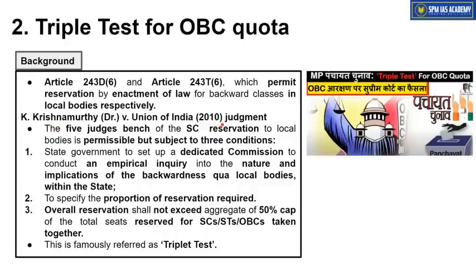There is a Supreme Court judgment from 2010 on OBC reservation in local body elections — the K. Krishna Murthy versus Union of India case. In this five-judge bench judgment, it was held that state governments and state legislatures can give OBCs reservation in local bodies using Article 243D and 243T, but only if three conditions are fulfilled. The first condition is that the state government must set up a dedicated commission to conduct an empirical inquiry into the nature and implication of backwardness without reservation in local bodies.